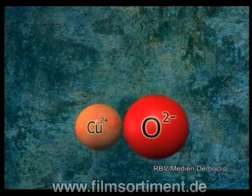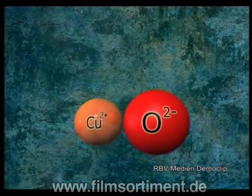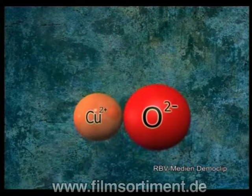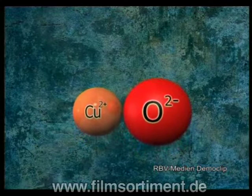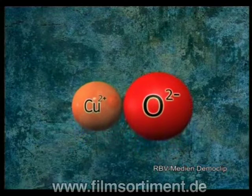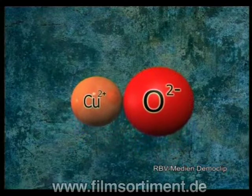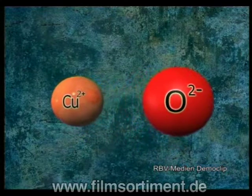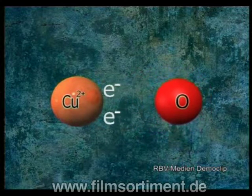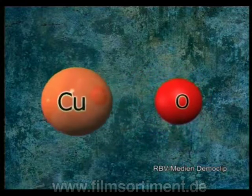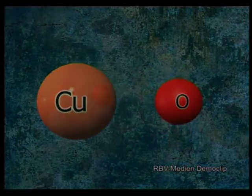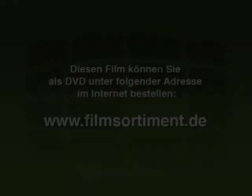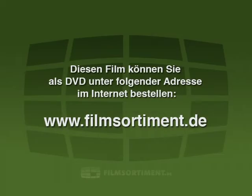Der logische Weg, Metalle aus ihren Oxiden zu gewinnen, ist somit die Umkehrung der Oxidation – die Reduktion, die Rückführung von Elektronen zum Metallion. Sehen wir uns das in einem Experiment an.